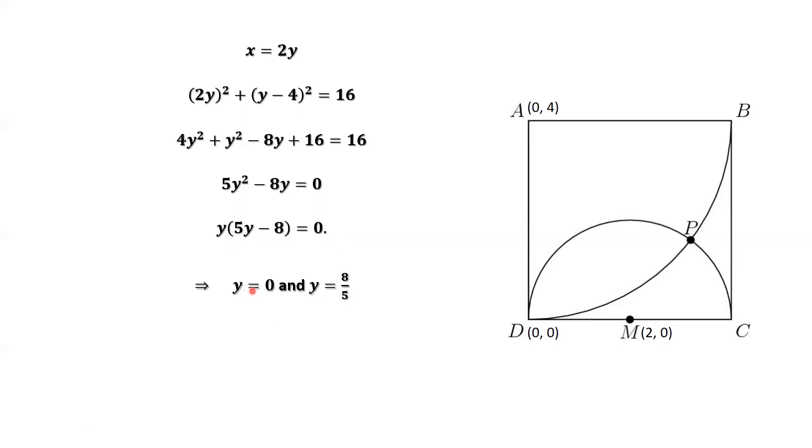Y equals 0 is this point, point D. Y equals 8 over 5 should be this point. We use this formula to find the two x-values. One is 0 and one is 16 over 5.